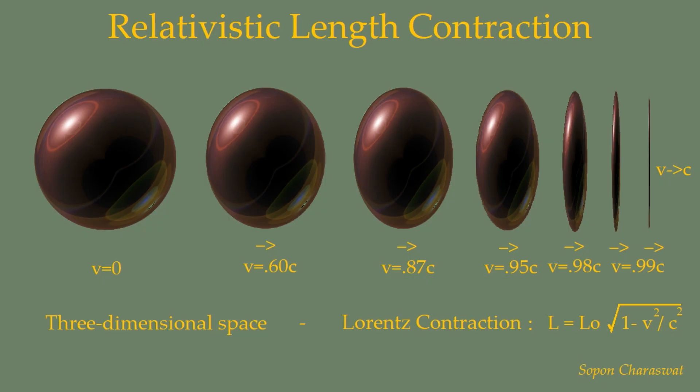Length contraction and time dilation are phenomena observed by an observer traveling at a non-zero speed relative to an object. In relativity, these effects are usually noticeable when the speed of the object is a significant proportion of the speed of light.